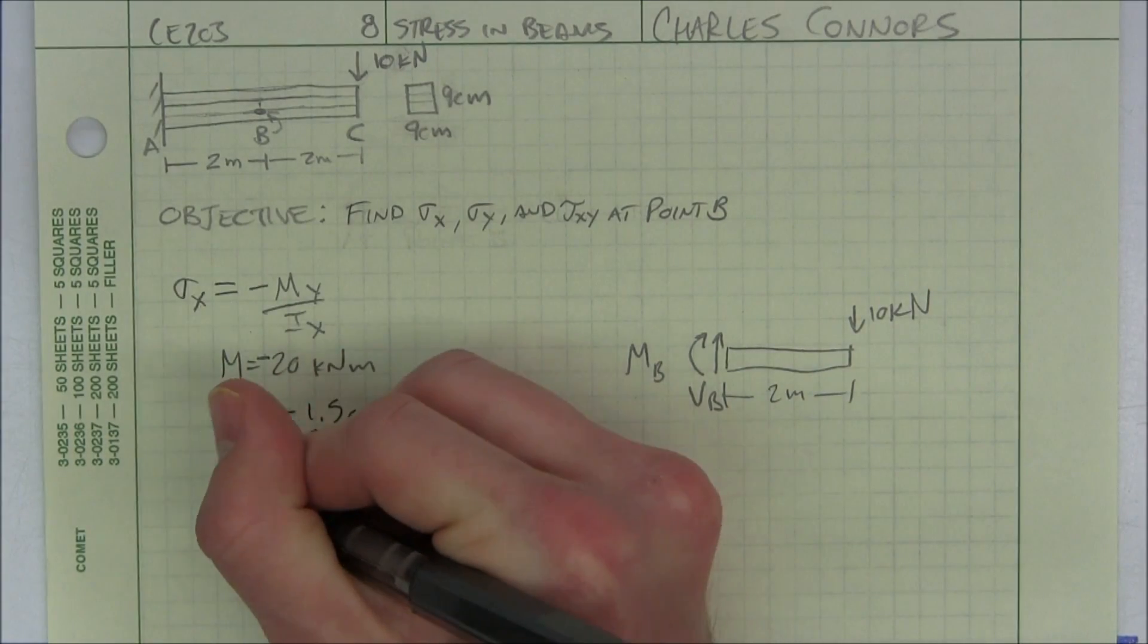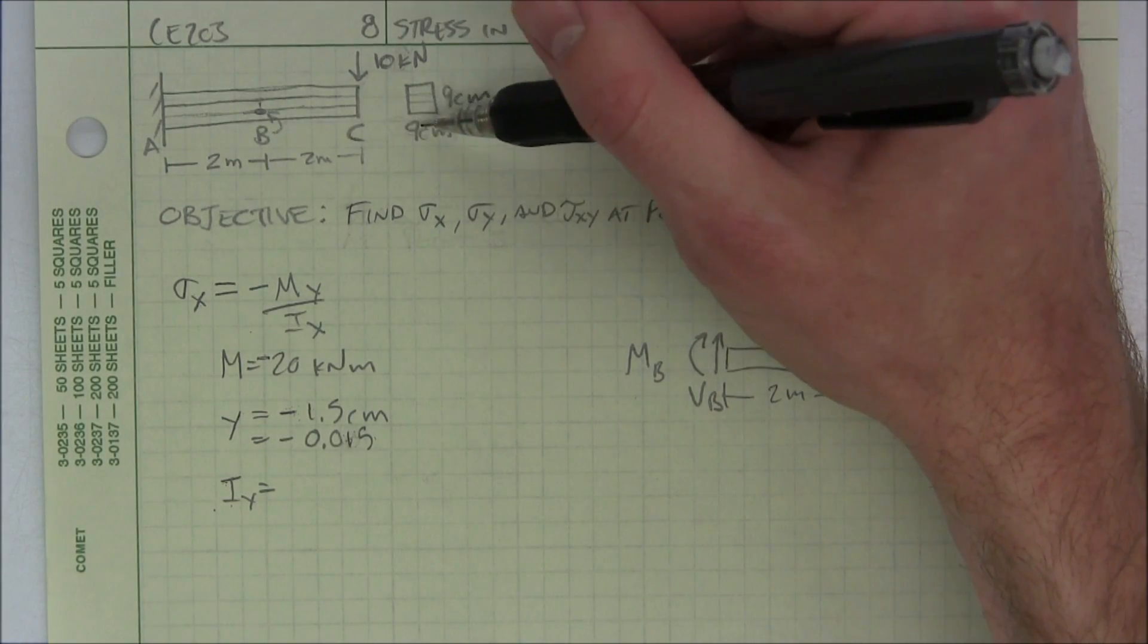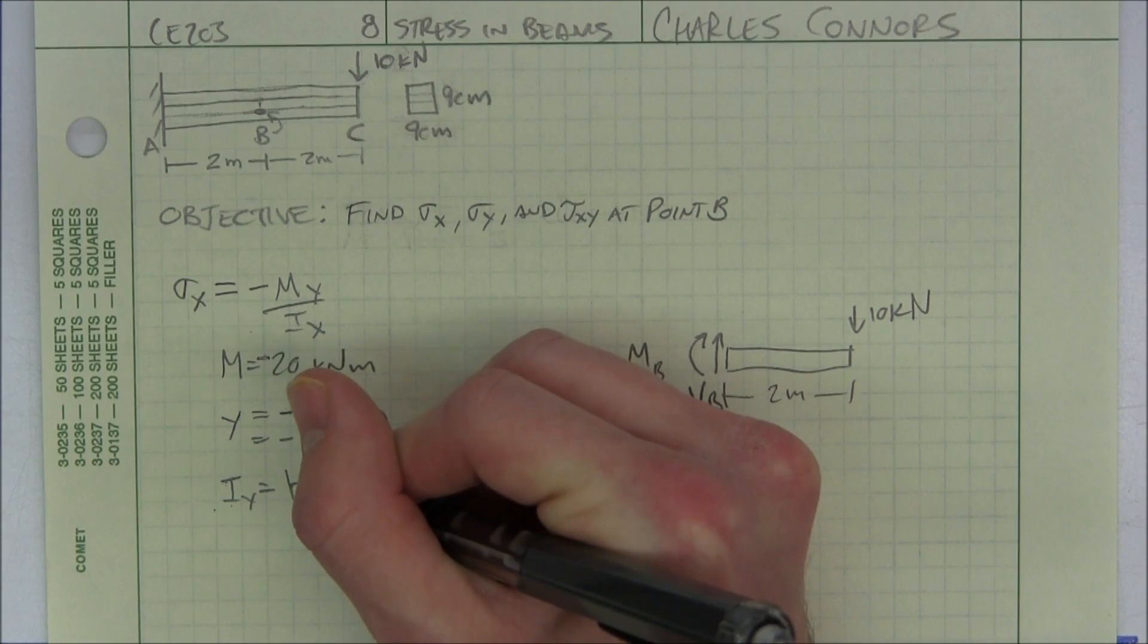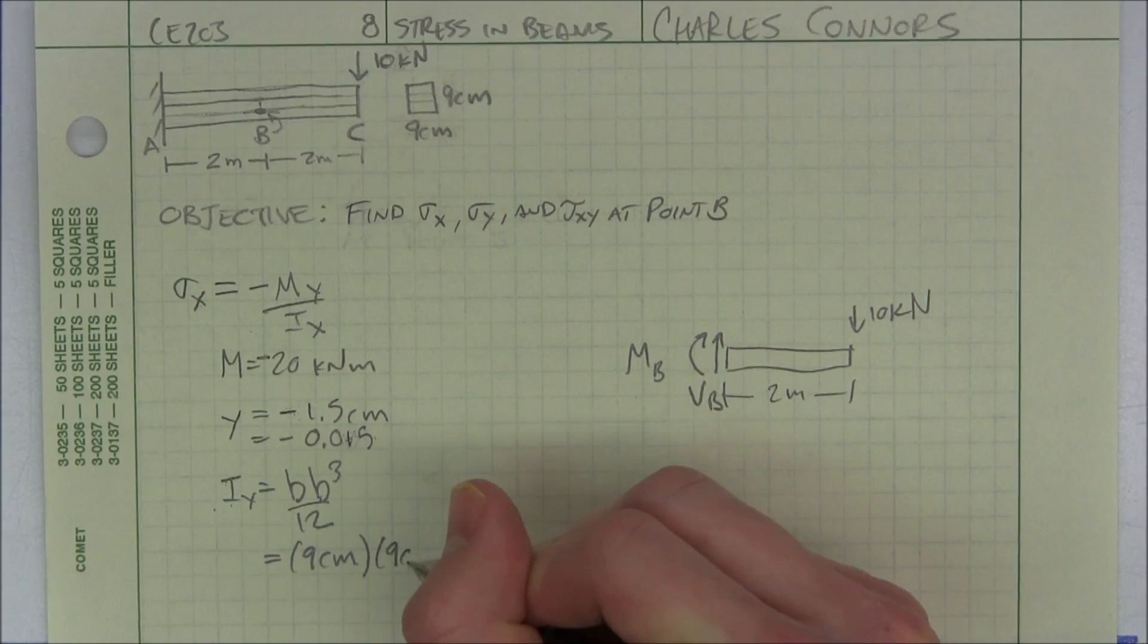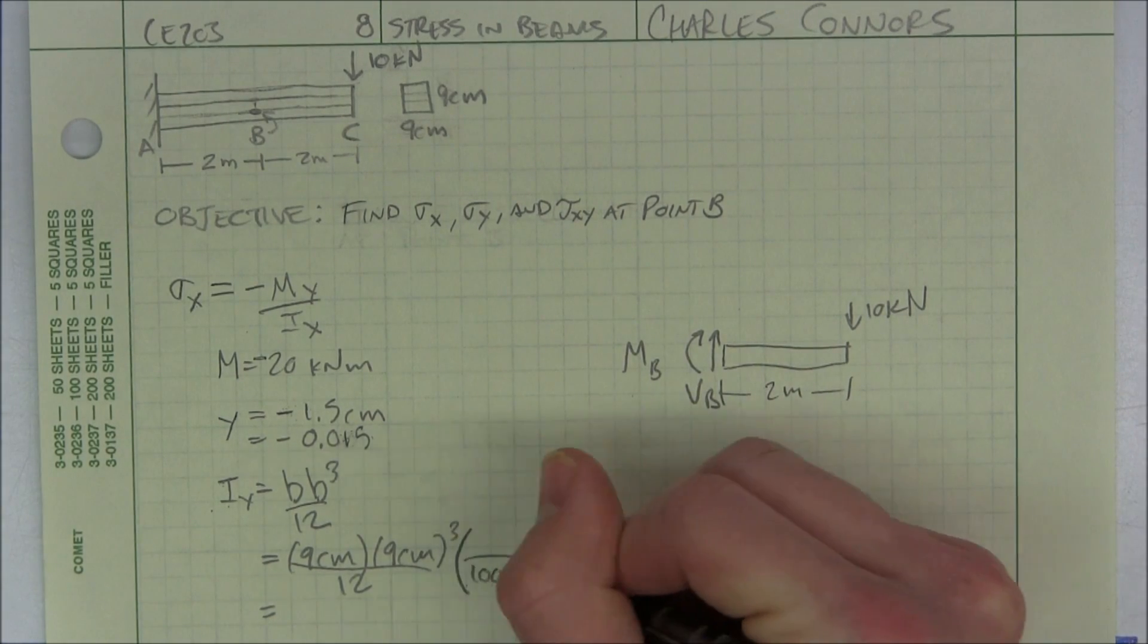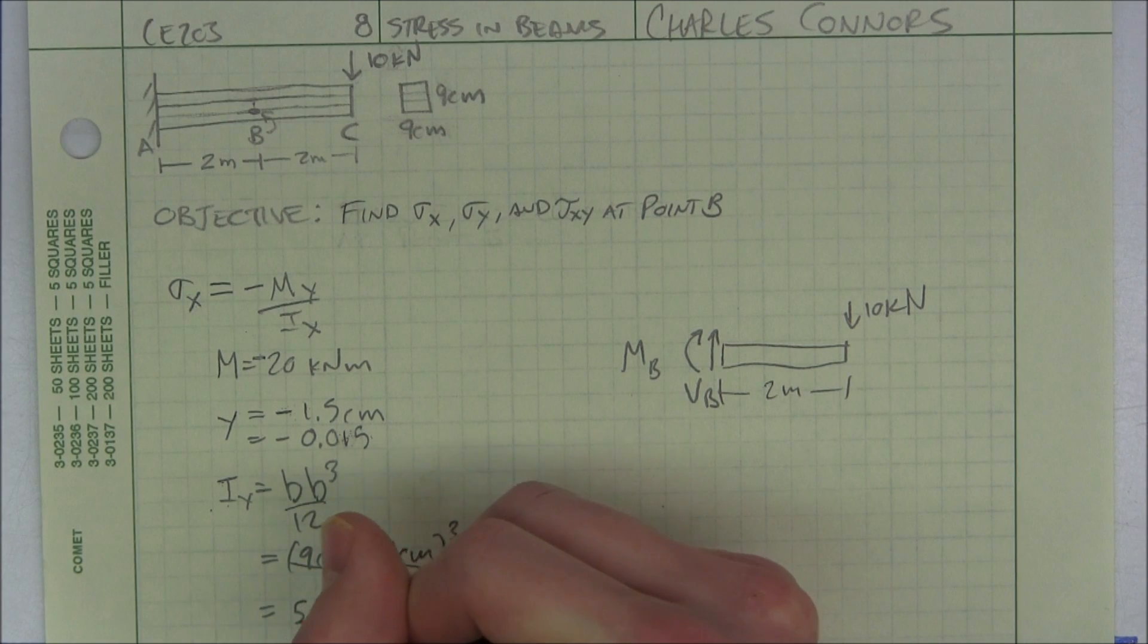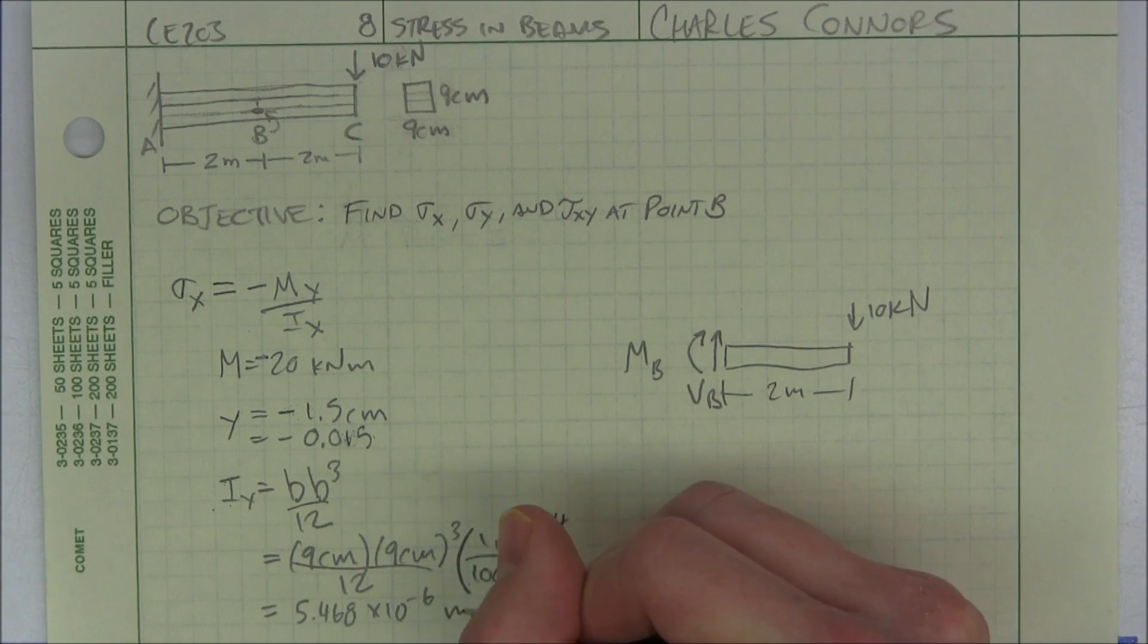Now we're going to calculate our moment of inertia. So we have to look at our cross-sectional area, which is a square. This is 9 centimeters by 9 centimeters. So our B and H are equal. So that's B times B cubed, essentially, divided by 12. That's 9 centimeters by 9 centimeters cubed, divided by 12. And I'm going to convert that into meters. 100 centimeters per meter to the fourth. And in my calculator, I get that to be 5.468 times 10 to the negative 6 meters to the fourth.